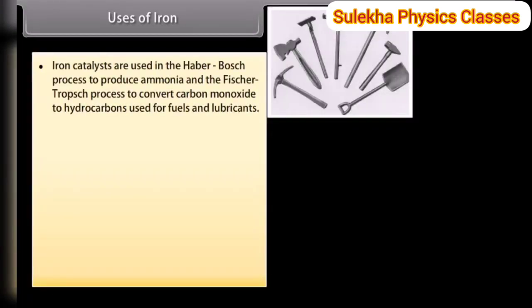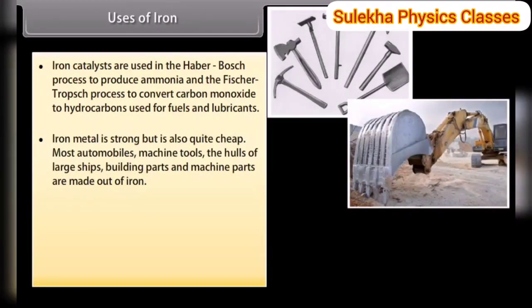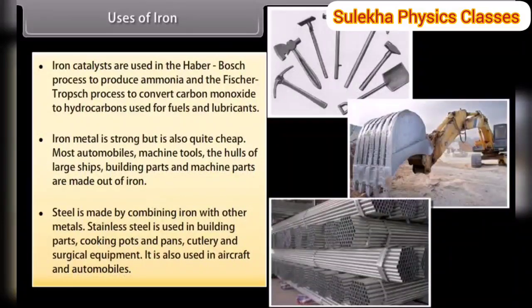Uses of iron. Iron catalysts are used in the Haber-Bosch process to produce ammonia and in the Fischer-Tropsch process to convert carbon monoxide to hydrocarbons for fuels and lubricants. Iron metal is strong and cheap — most automobiles, machine tools, hulls of large ships, and building and machine parts are made from iron. Steel is made by combining iron with other metals. Stainless steel is used in building parts, cooking pots and pans, cutlery, surgical equipment, aircraft and automobiles.